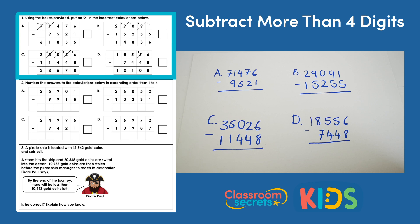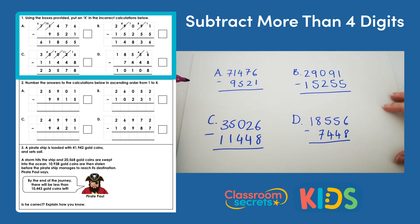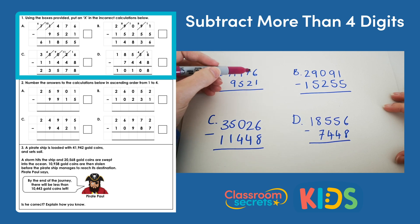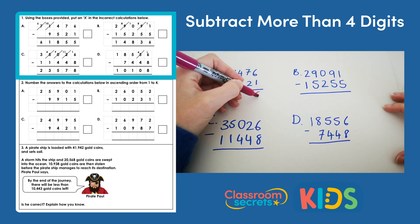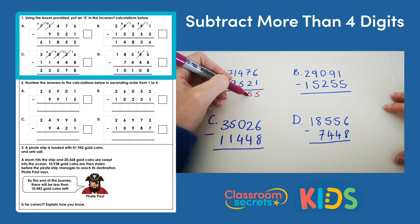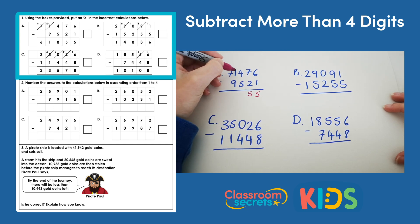So the first thing we need to do is calculation a: 71,476 subtract 9,521. 6 take away 1 is 5, 7 take away 2 is 5, and then 4 take away 5 — we can't do that, so we're going to need to do an exchange.